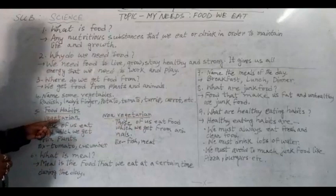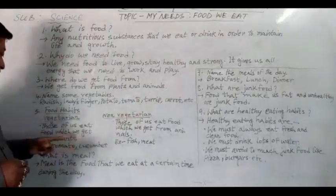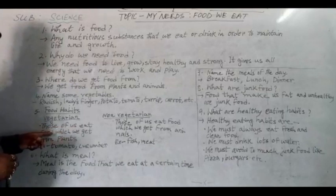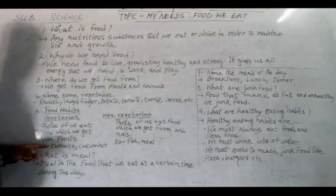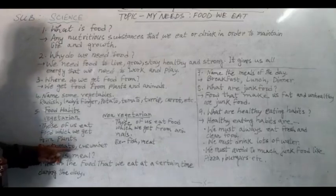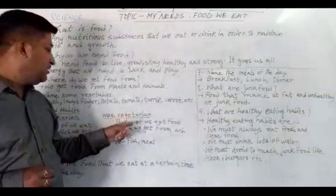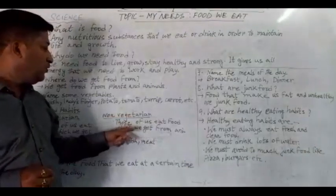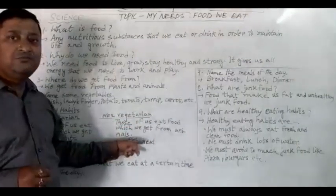Food habits: vegetarian and non-vegetarian. Vegetarians are those of us who eat food which we get from plants — for example, tomato, cucumber. Non-vegetarians are those of us who eat food which we get from animals — for example, fish and meat.